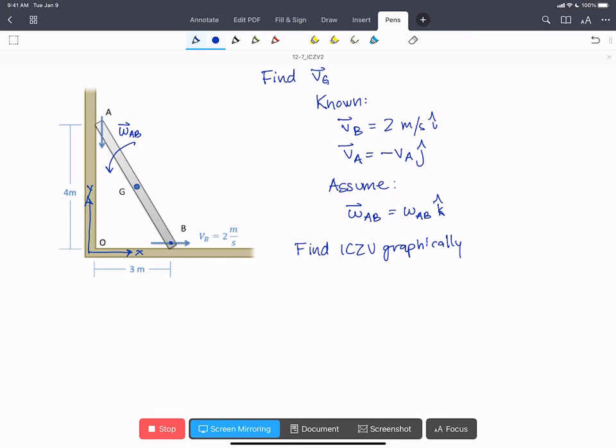So we go from the point B, draw a line perpendicular to the velocity VB. And then from point A, we're going to draw a line perpendicular to that velocity as well. And here at the intersection point, that's the ICZV for this rigid body.